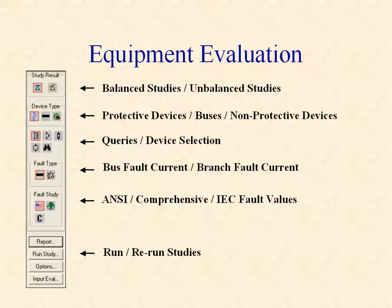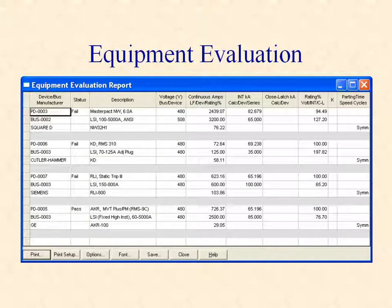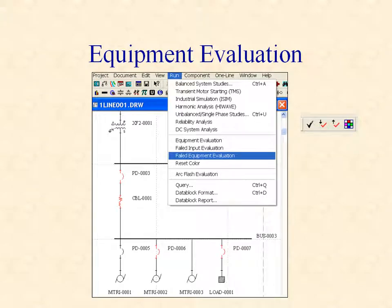All of the studies can be run or re-run directly from the equipment evaluation display. The equipment evaluation results can be printed in tabular form or saved in a spreadsheet format. The equipment evaluation report for protective devices uses a multi-line format for efficiency and easy comparison of ratings and calculated values. The equipment evaluation results can also be displayed directly on the one-line. Equipment that doesn't pass all of the evaluation criteria is highlighted in red or a user-defined highlight color.